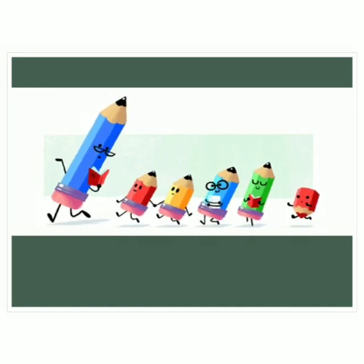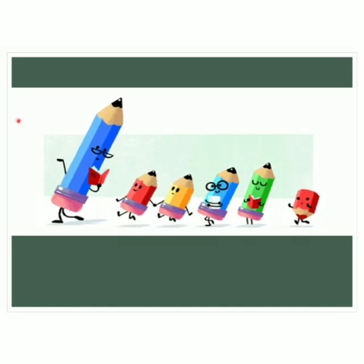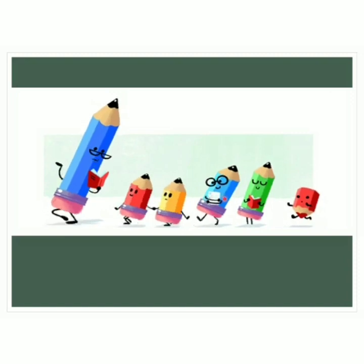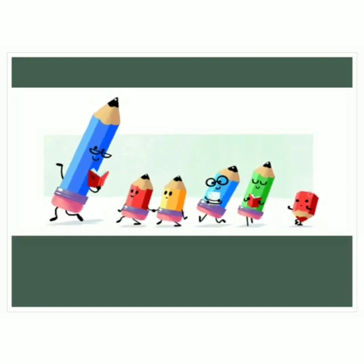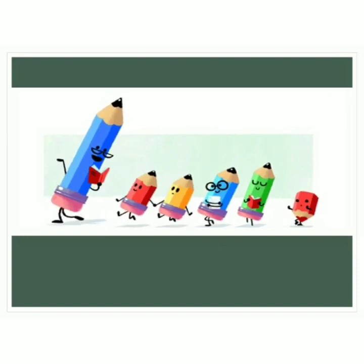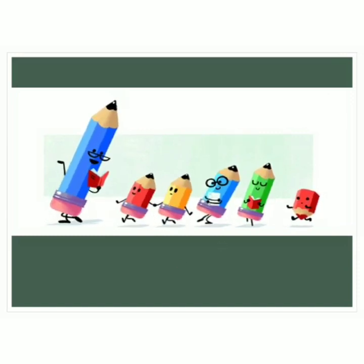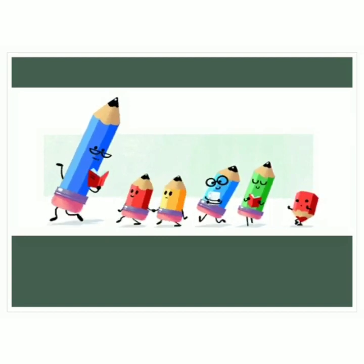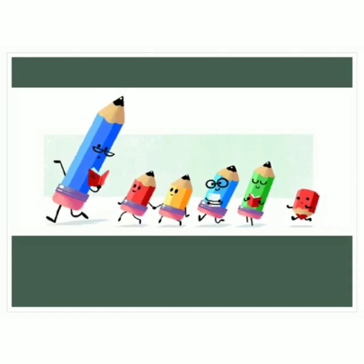Now, can you tell how many pencils are there? Let us count: 1, 2, 3, 4, 5, and 6. So, the total number of pencils in the picture is 6. But how can we find the position of these pencils? For this, we use ordinal numbers.